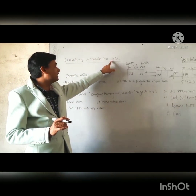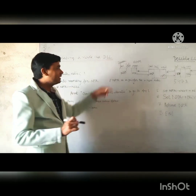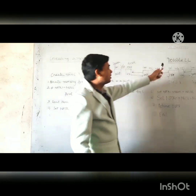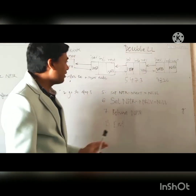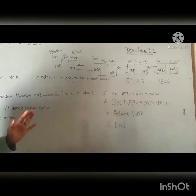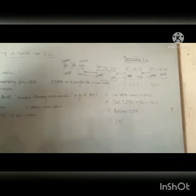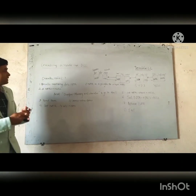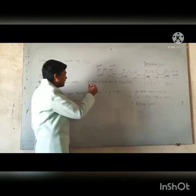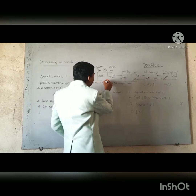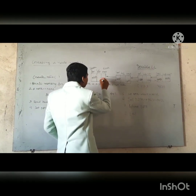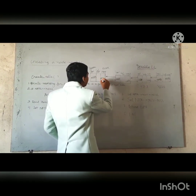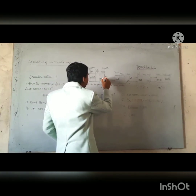Here I have written DLL. DLL means double linked list. Now we'll see how to create a double linked list. Before that, let me explain how it works. Like a single linked list, every double linked list has some nodes.